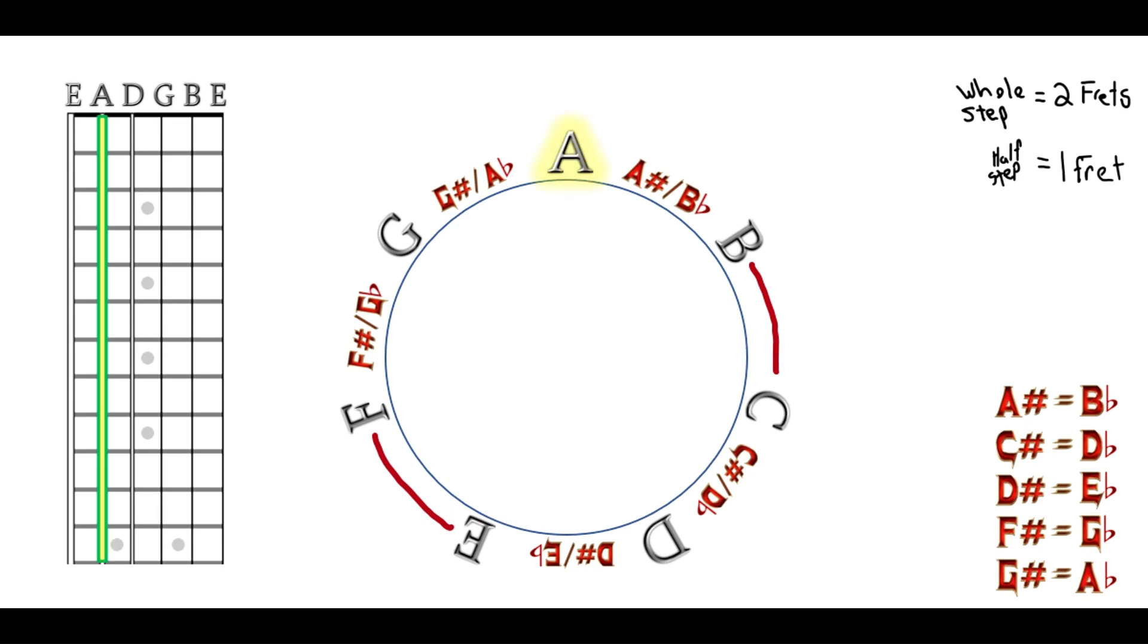Now let's choose the A string. On the A string, we are going to randomly pick fret 5. If you don't know what note fret 5 on the A string is, we'll use the circle to count up the scale. Starting on A as the open string, or 0, we go to the first fret, which is A sharp or B flat, then fret 2, which is B, then the 3rd fret, which is C, the 4th fret is C sharp or D flat, and then we're on fret 5. Fret 5 on the A string is a D.